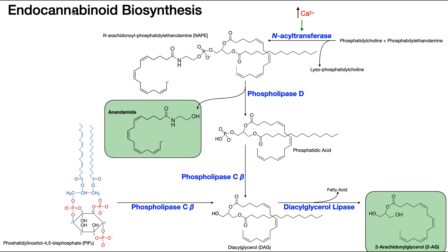Endocannabinoids are actually synthesized from a couple of phospholipids. Here's an example: phosphatidylcholine, and the other one is phosphatidylethanolamide. Now we know the general structure of a phospholipid — you've got a glycerol backbone and you've got two fatty acid chains. Now we have this enzyme here called N-acyltransferase. What this enzyme does is it takes one of the fatty acids from one of these phospholipids and transfers it to the other one.